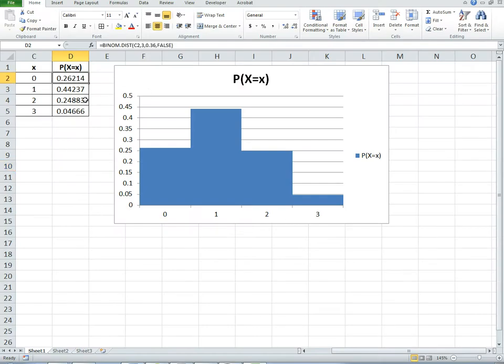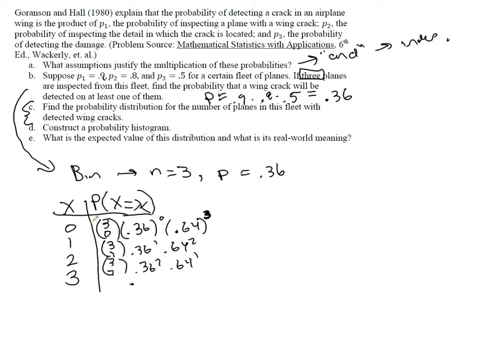26% chance that none of them get caught. 44% chance that exactly one gets caught. And so on. Now we want to know the probability that at least one gets caught. So what is the probability that the number caught is at least one?